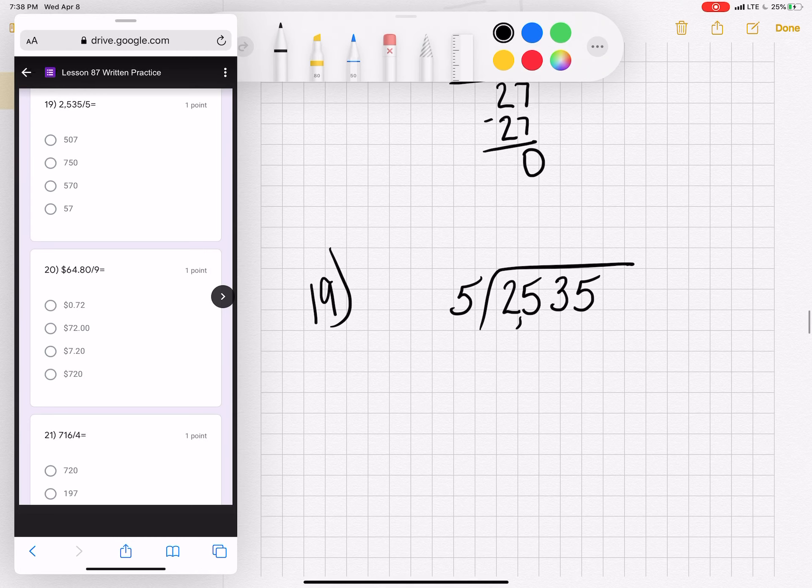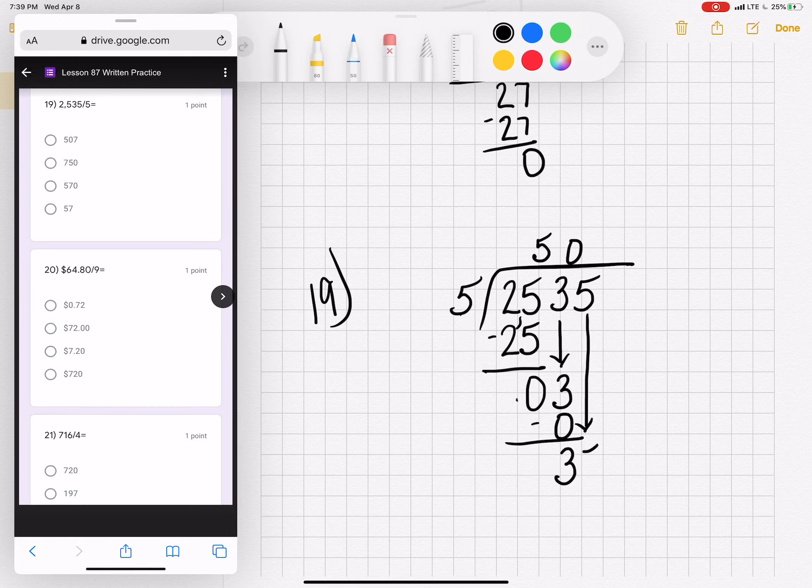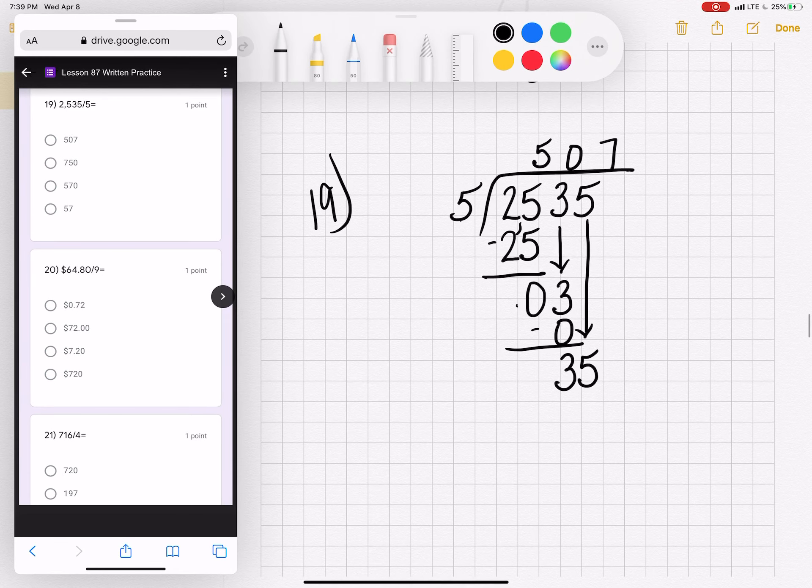Number nineteen. Two thousand five hundred thirty-five divided by five. Five goes into twenty-five five times. Five times five is twenty-five. Twenty-five minus twenty-five is zero. And bring down a three. This is a tricky step right here. How many fives go into three? Zero. Zero times five is zero. Three minus zero is three. And now bring down your five. Five times what is thirty-five? That is seven. Seven times five is thirty-five exactly. And you have no remainder. Number nineteen is five hundred and seven.